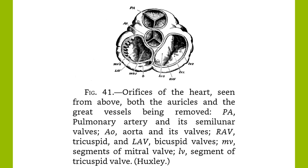Heart Sounds. Through the stethoscope, two heart sounds may be heard, known as the first and second sounds. The first is a soft, rushing sound, stronger and louder than the other, and is caused in part by the contraction of the muscle itself when the blood is forced out, and in part by the closure of the auriculoventricular valves. The second sound is shorter and sharper — a snap — and is caused by the closure of the semilunar valves when the contraction of the ventricles ceases and they begin to refill. In certain diseased conditions where the edges of the valves are roughened, they do not snap properly and the sound varies from the normal.